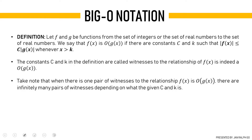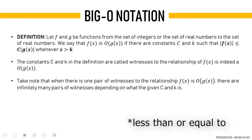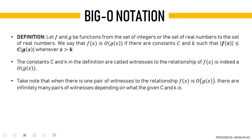The definition of big O notation is as follows. Let f and g be functions from the set of integers or the set of real numbers to the set of real numbers. We say that f of x is big O of g of x if there are constants c and k such that f of x is less than or equal to c times g of x whenever x is greater than k. In simpler terms, f of x is big O of g of x means that f of x grows smaller or slower than some fixed multiple of g of x as x grows without bound.